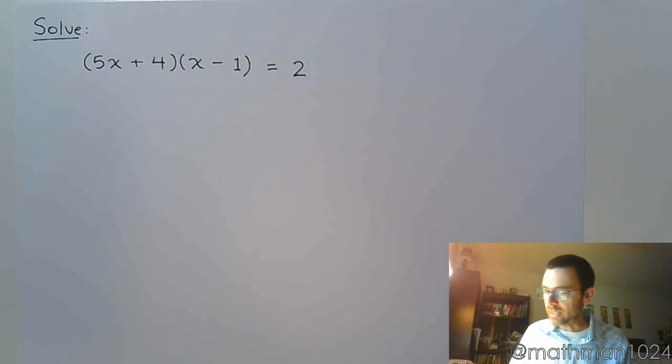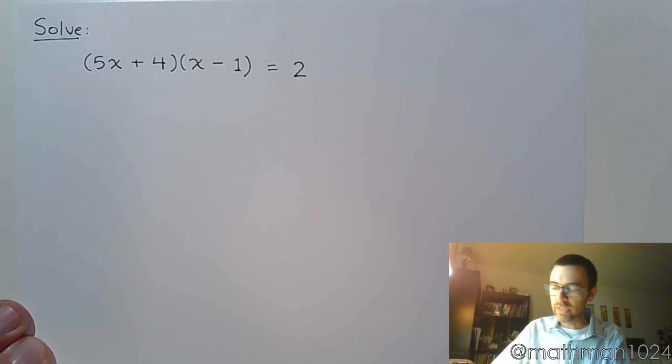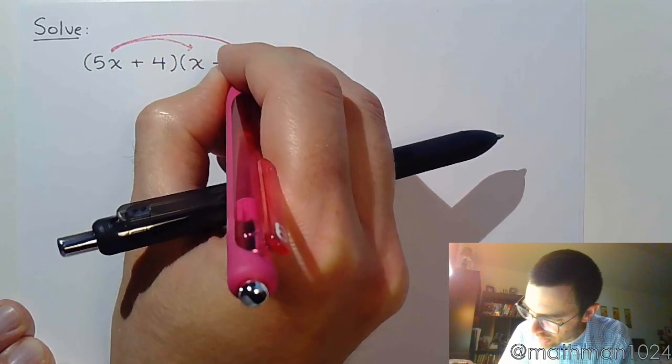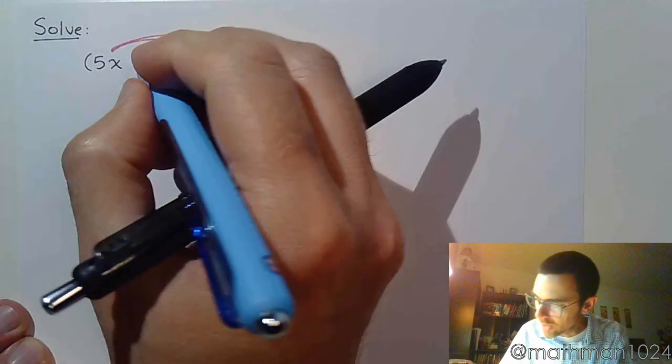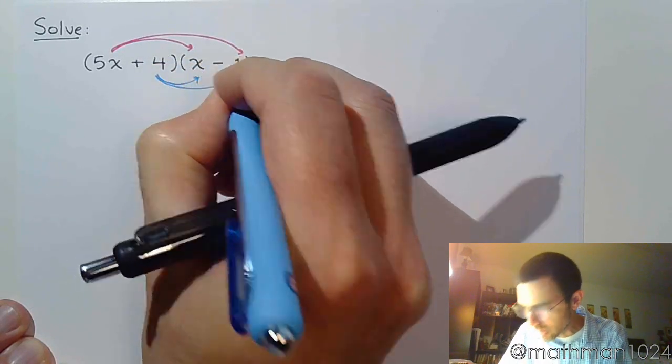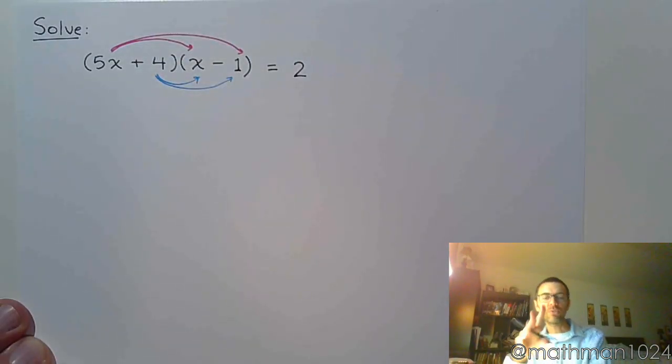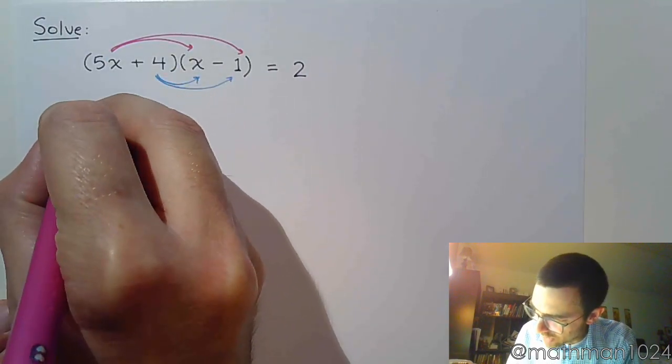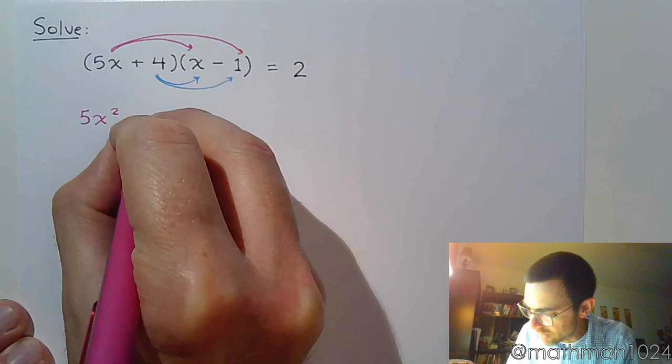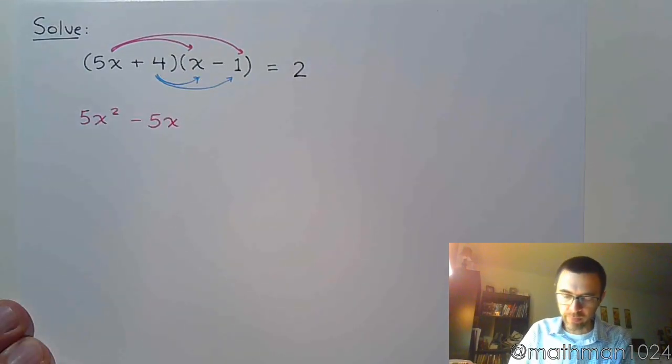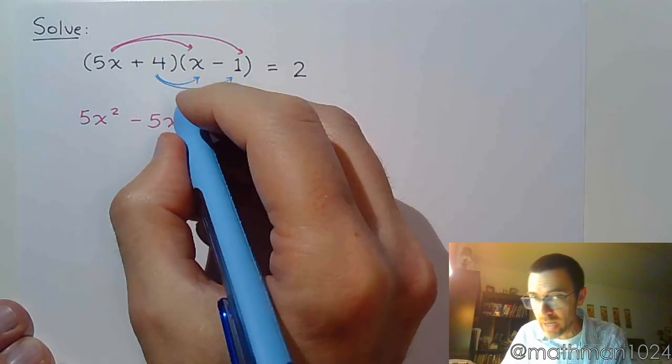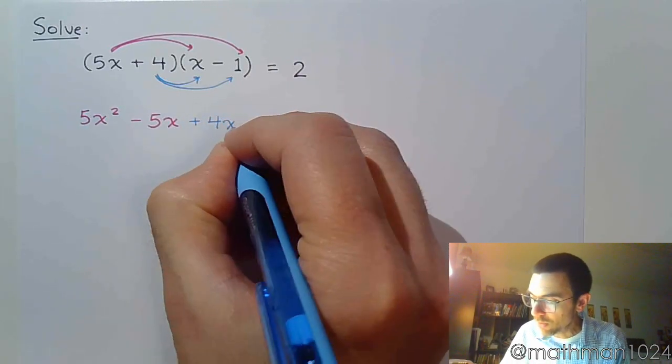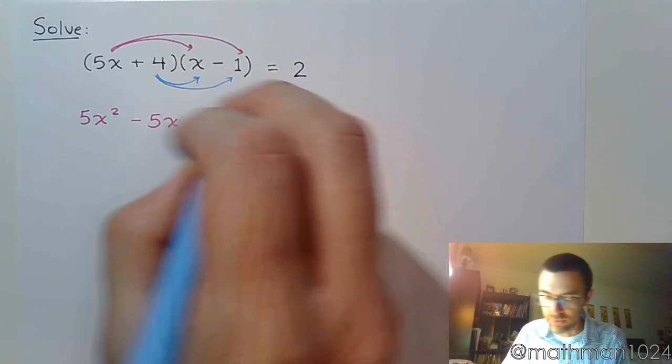So here's what we need to do first. The first thing is to take the left side of the equation and foil that out. Take the 5x and distribute. Take the 4 and distribute. That should be your first task. So when we do that, distributing the 5x gives me 5x squared minus 5x. And then we distribute the positive 4, so that's plus 4x. 4 times negative 1 is negative 4.